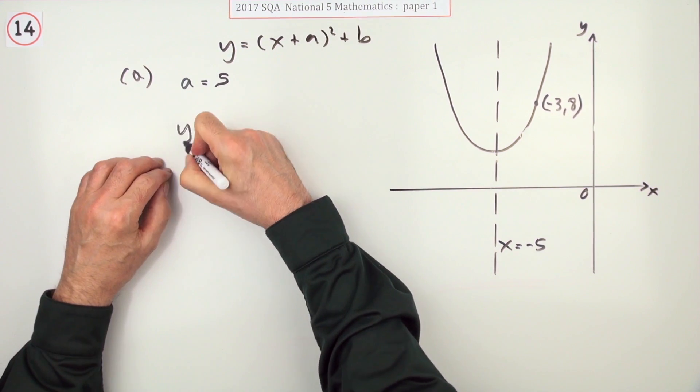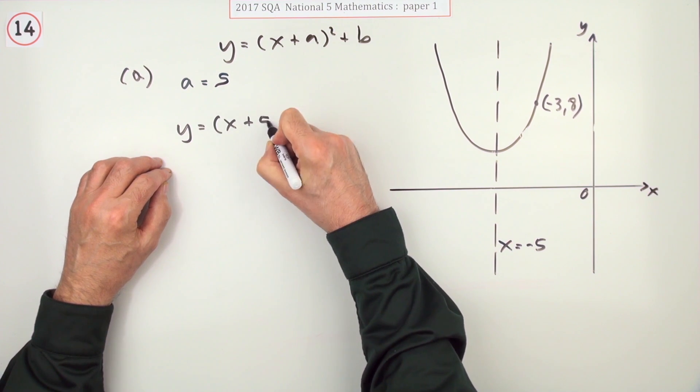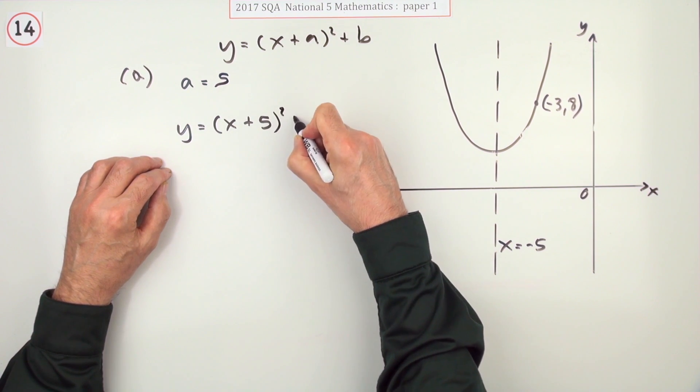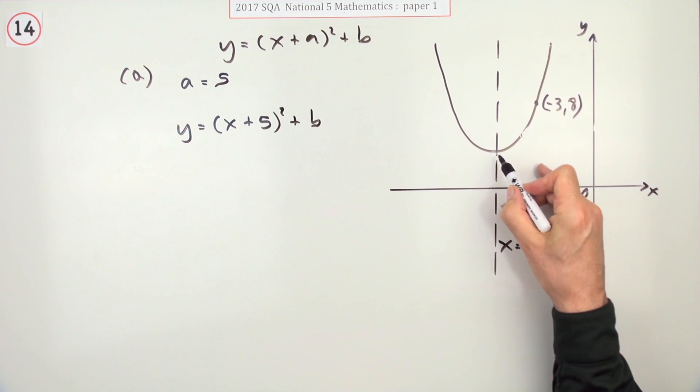Because what you would write for that would be x plus 5 squared plus whatever b is, if it was actually a negative 5 at the turning point.